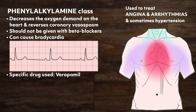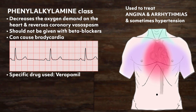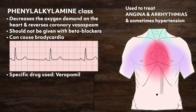Also, they should not be given with beta blockers, because beta blockers also depress cardiac mechanical and electrical activity. This drug treats arrhythmias as well as angina by reducing the myocardial oxygen demand and reversing coronary vasospasm.